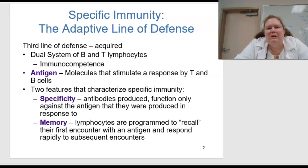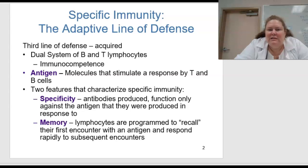The specific immunity is the adaptive line of defense — the third line of defense. We talked about the first and second in the last video. The third line is going to be acquired, and this is a dual system of both B and T lymphocytes. This is immunocompetence.